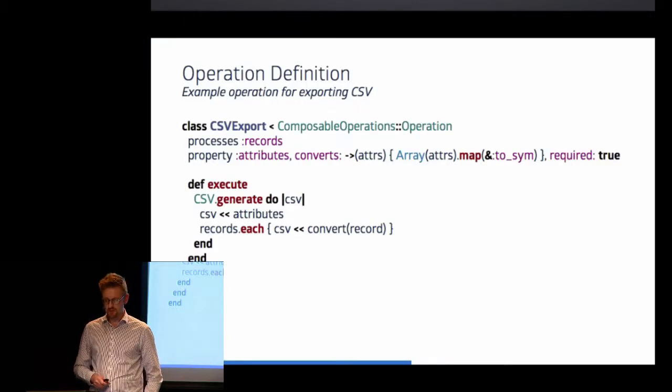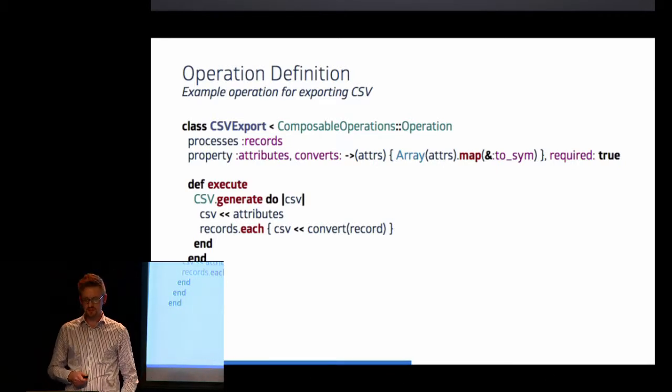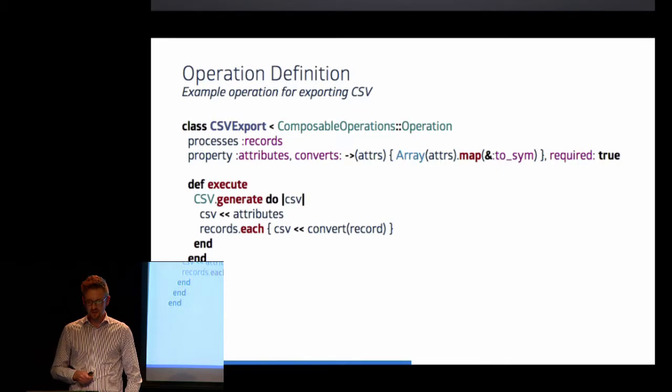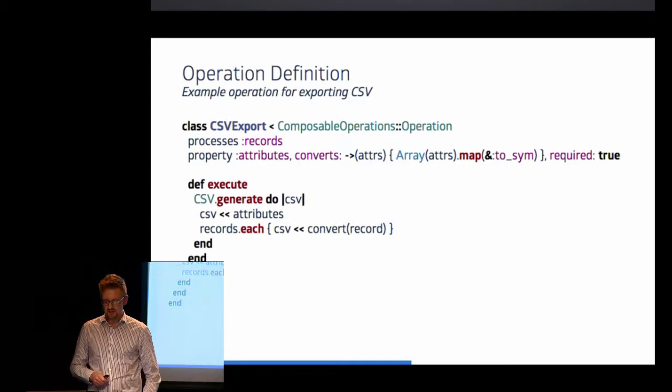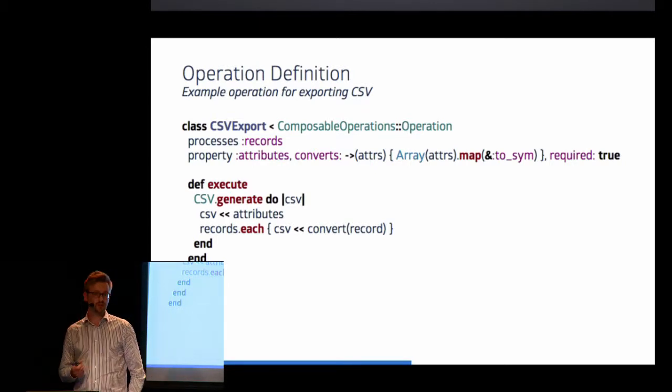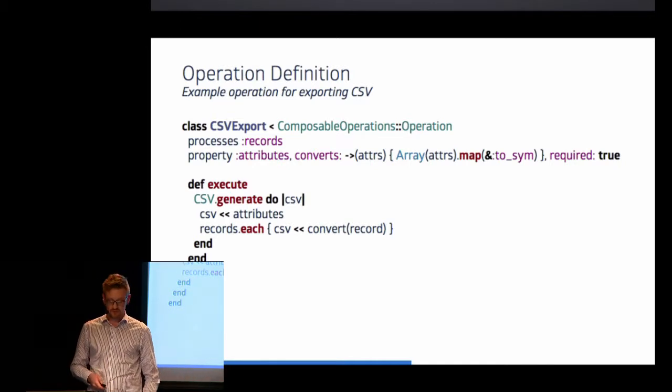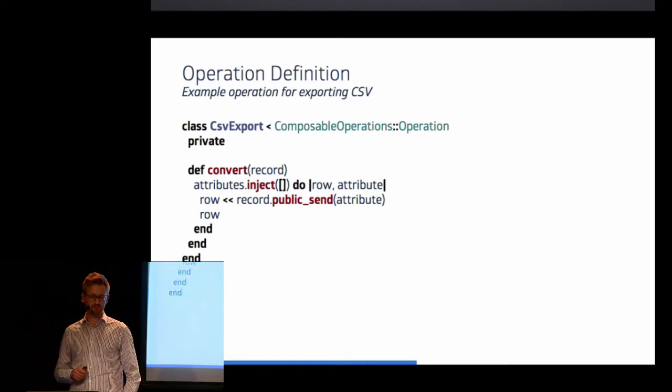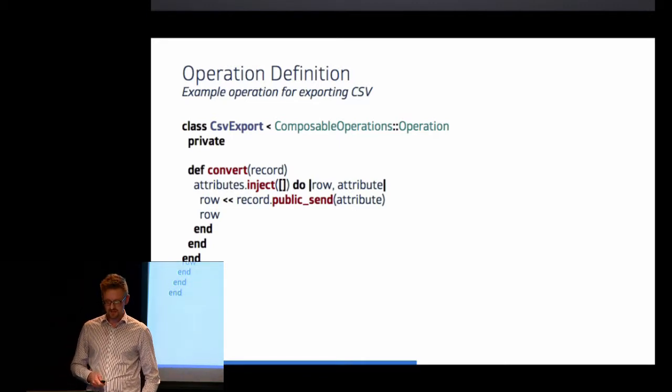The process I want to model is exporting CSV from basically any record. So we have on this slide, we have an operation that accepts a set of records, or a list of records to be more precise, and accepts a configuration parameter called attributes that tells the operation which attributes you want to be exported into CSV. And it is actually a super simple operation in the sense that we just iterate over the records and convert each record into an array representation, which is then converted into a string. And for the sake of completeness, this is the convert operation.